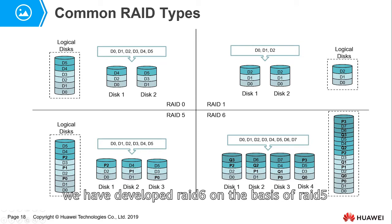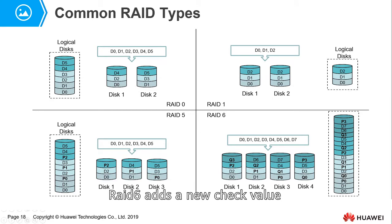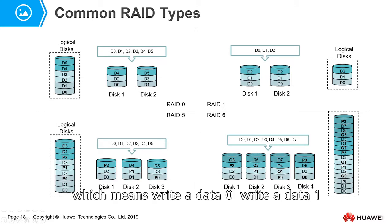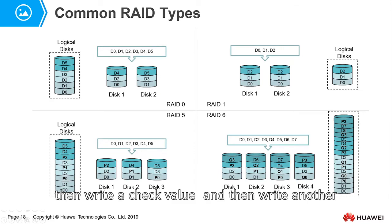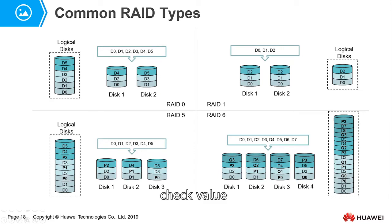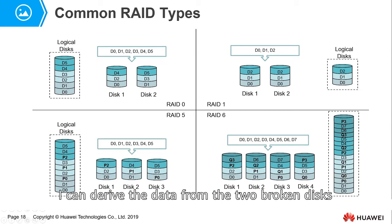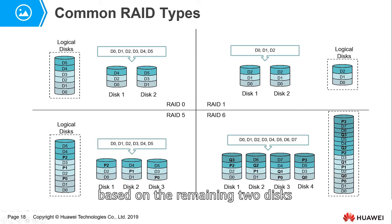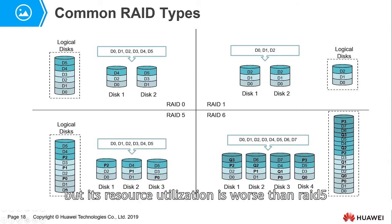Therefore, RAID 6 was developed on the basis of RAID 5. RAID 6 adds a second check value — you write data 0, data 1, a first check value, and then a second check value. If any two disks break at random, you can derive the data from the two broken disks based on the remaining disks. RAID 6 is more secure than RAID 5, but its resource utilization is worse than RAID 5.